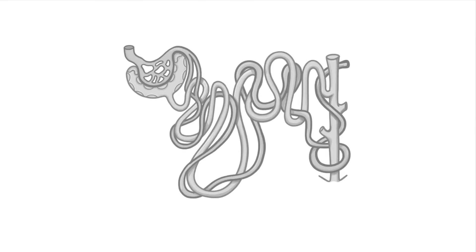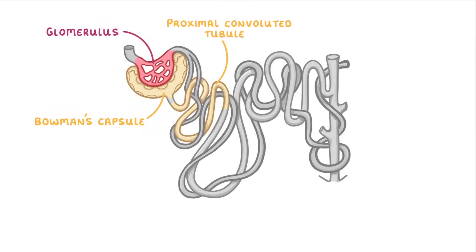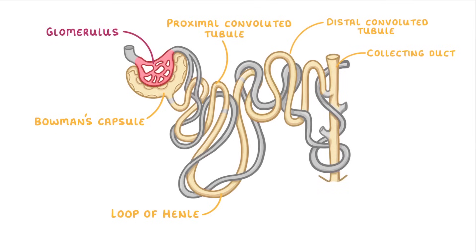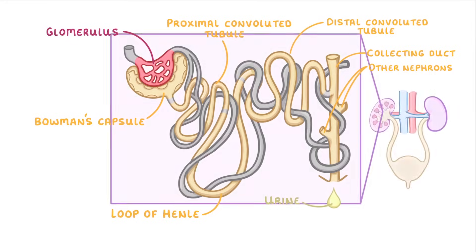To finish up, let's look at how we name the different parts of the nephron. We've already seen the glomerulus and the Bowman's capsule. After the Bowman's capsule comes the proximal convoluted tubule, then there's the loop of Henle, then the distal convoluted tubule, and finally the collecting duct, which also receives fluid from other nephrons. Any fluid that passes out of the collecting duct is classed as urine, and you can see that it's going to pass down the ureter to the bladder, where it can then be released as waste.